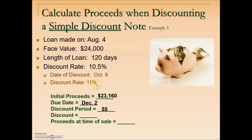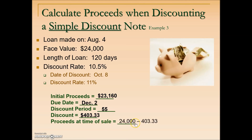The bank's discount rate charge is 11%. Since this was originally a simple discount loan, we take the face value or maturity value of $24,000 times the 11% discount rate times the remaining 55 days over 360 to calculate the bank discount, which equals $403.33. Had the original payee held this until maturity they would have received $24,000, but since they are selling it on October 8th, they receive the maturity value less the discount — proceeds of $23,596.67.